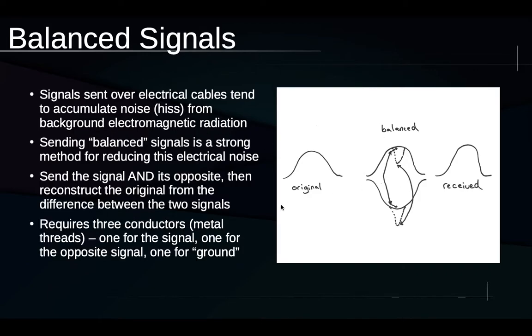And it requires that our cables have three threads of metal in them. One is for the signal, one is for the opposite of the signal, and the third one is a ground that is electrically necessary. It's a place where all of the electricity can return to when we're done with it.